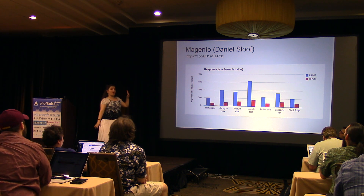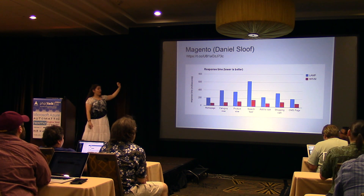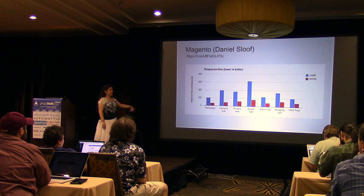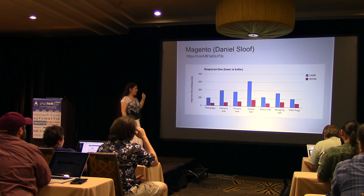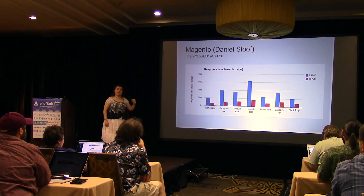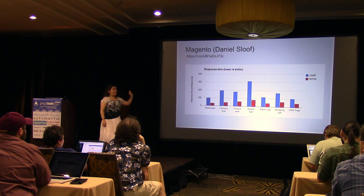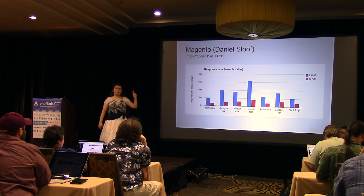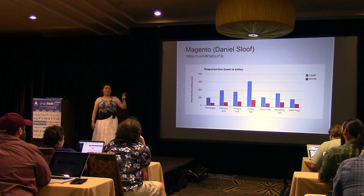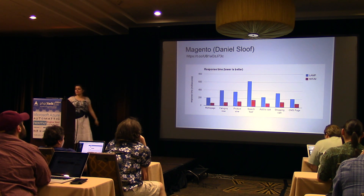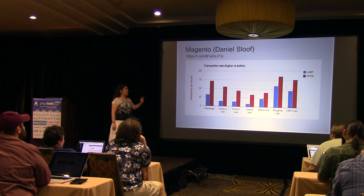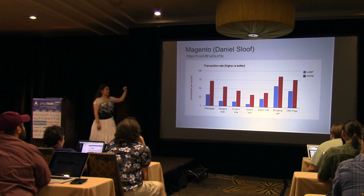This is Magento — Daniel Sleuth set up these benchmarks. The URLs will be up later so you can download and look at them yourself. This shows response time in milliseconds for a LAMP stack versus HHVM — yeah, that's a big difference. Notice something about Magento: it's a pretty large and complex code base. Two things I'm going to be talking about a lot: large, complex code bases show great results. And here's the transaction rate — you get a lot more transactions with HHVM.